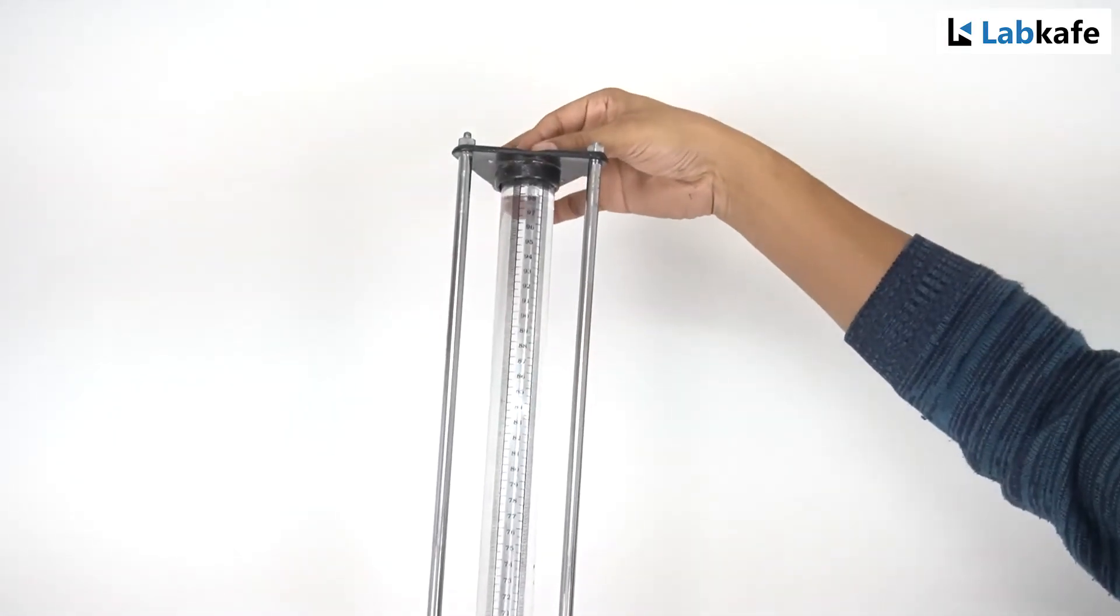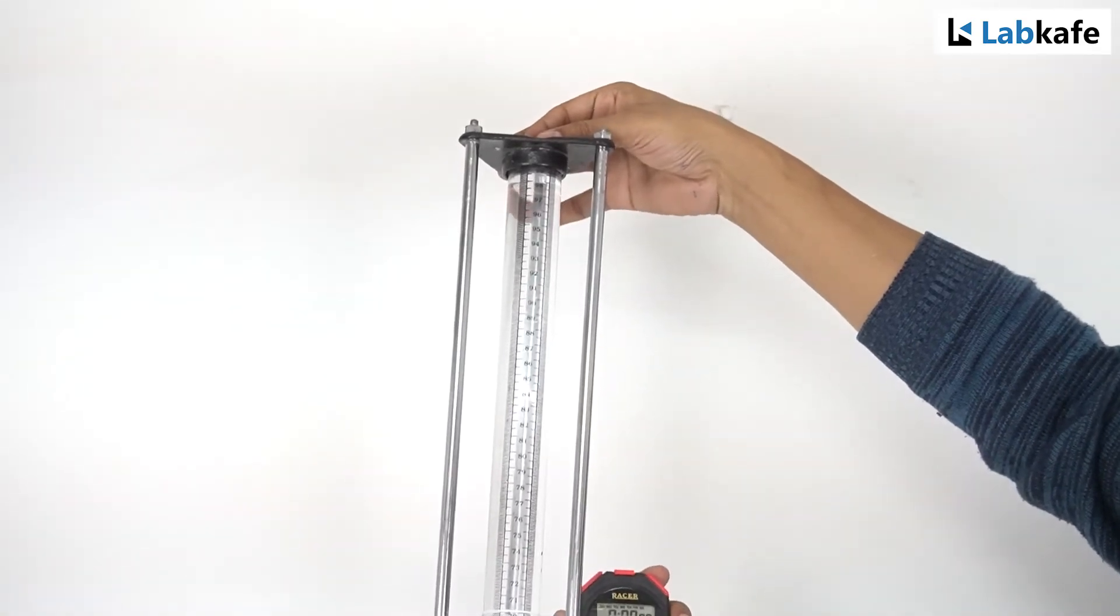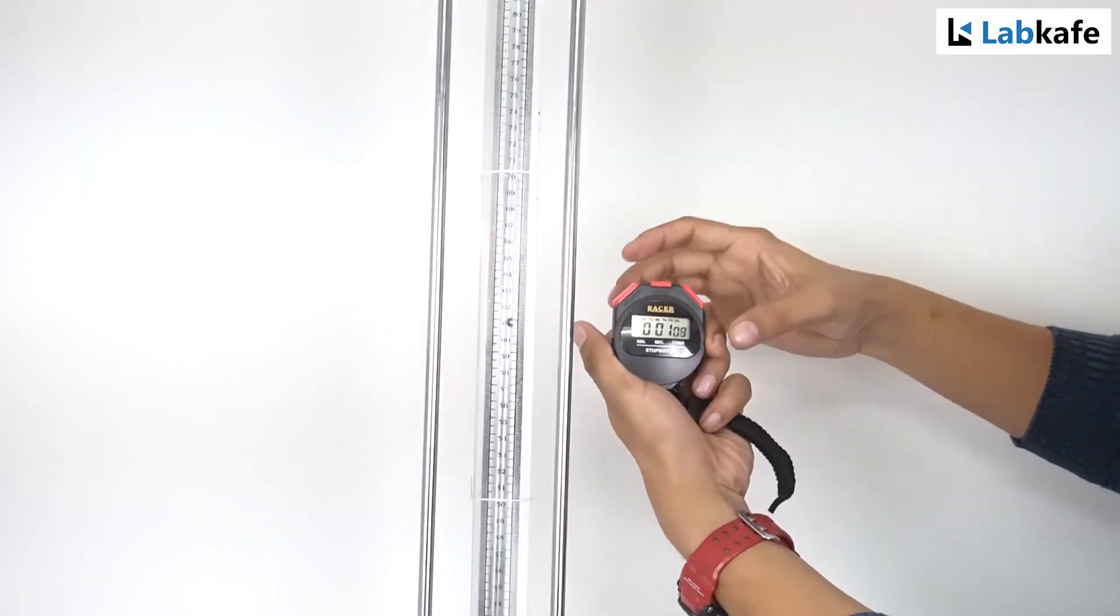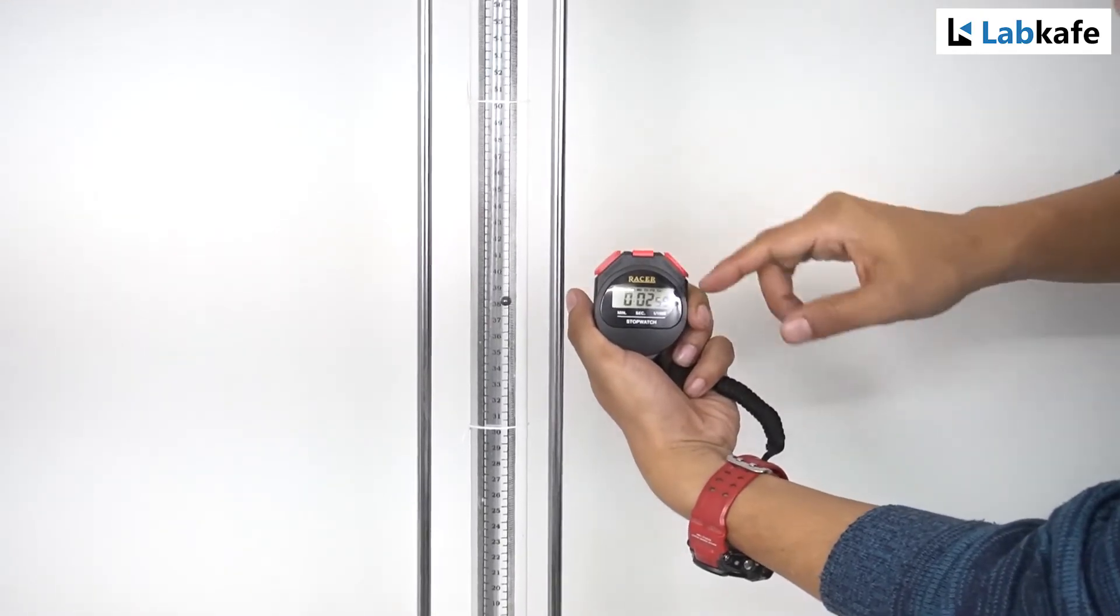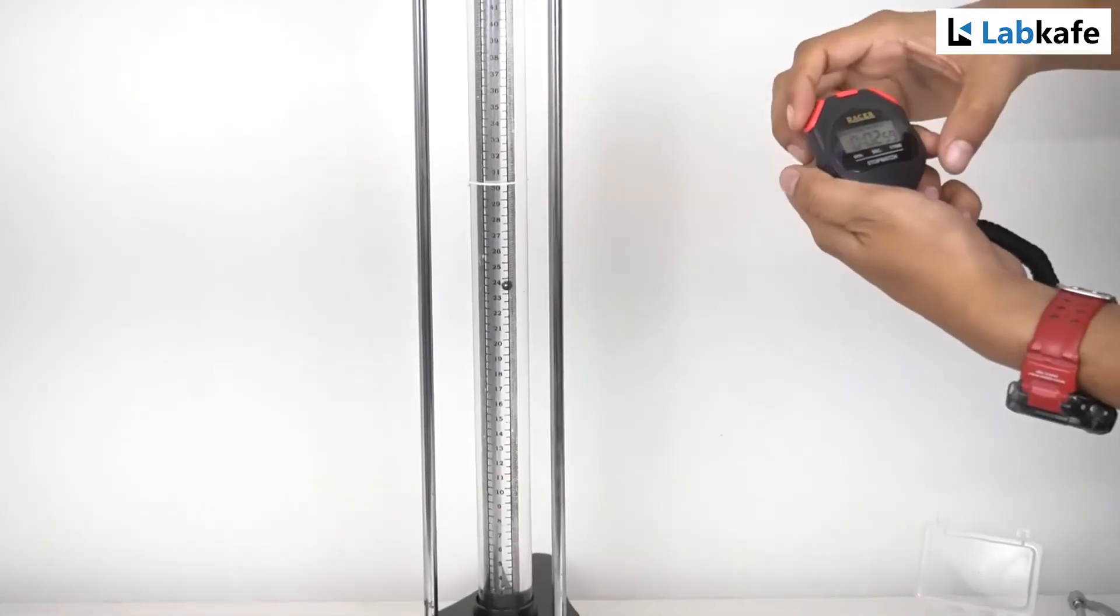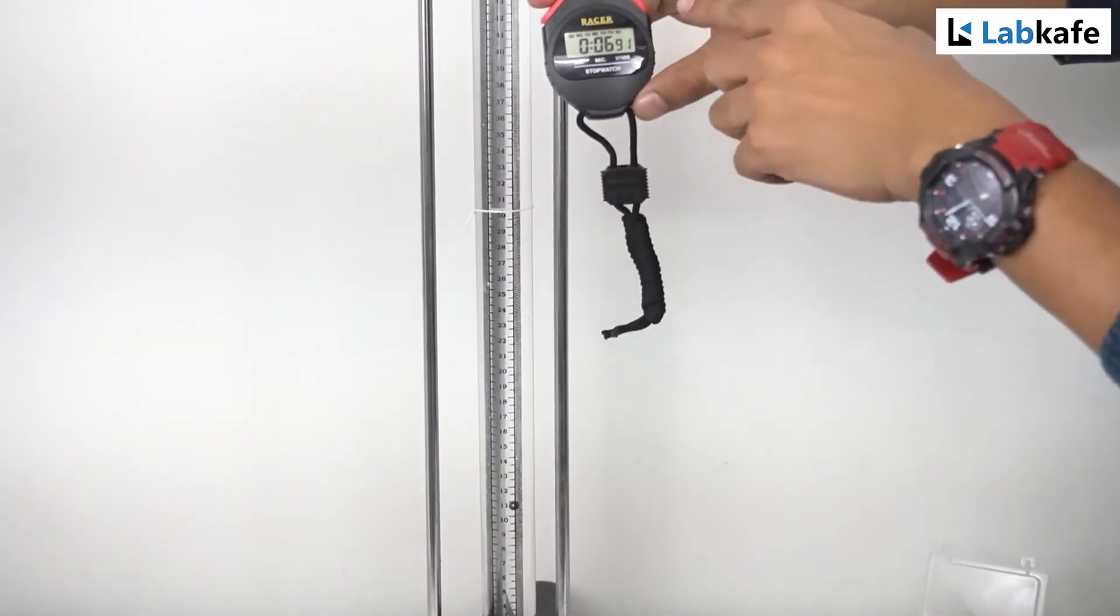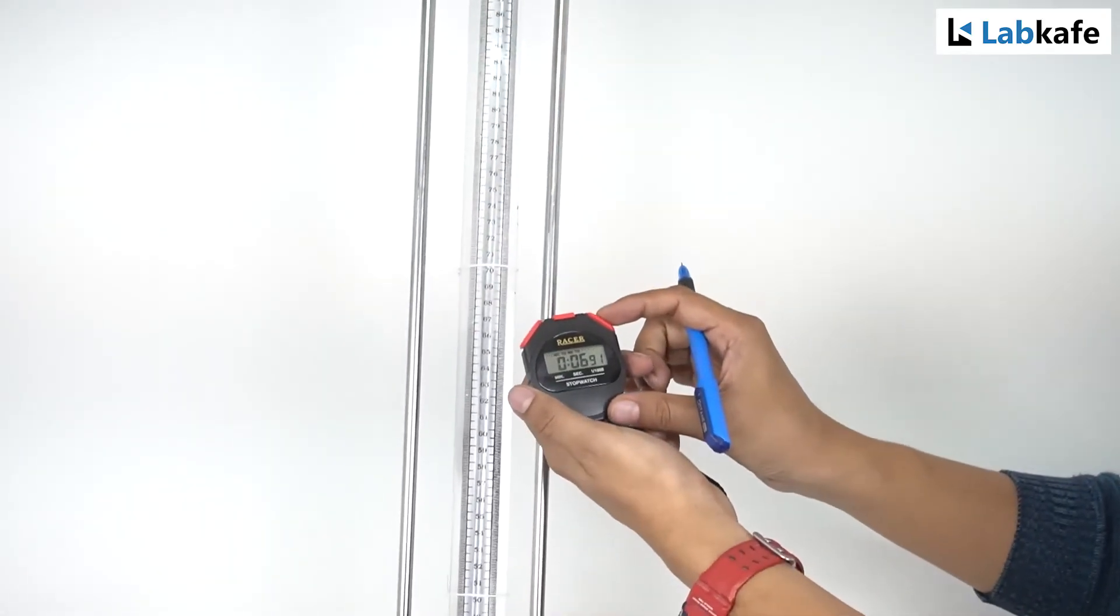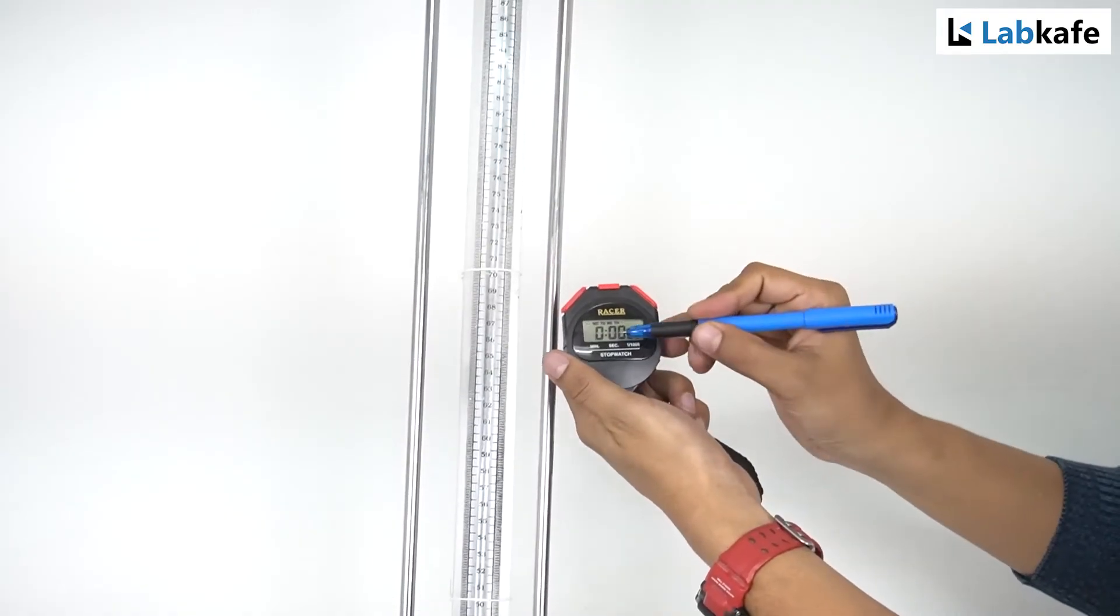I am dropping the ball and keeping my stopwatch ready. Now it is 2.59, and when it crosses it is 6.91. Then I reset the stop clock by pressing reset, so it becomes all zero now.